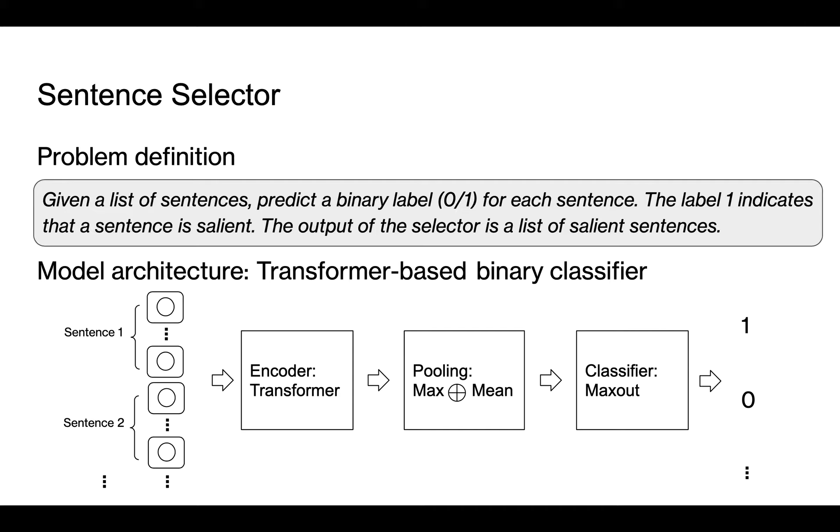This figure shows a high-level architecture of the sentence selector. It is a transformer-based binary classifier. The encoder maps each word in the input sentences into a low-dimensional vector. We then apply max and mean pooling on the output representations to form the sentence embedding. The sentence embedding is fed into a three-layer batch normalized max-out network to predict its salient probability.